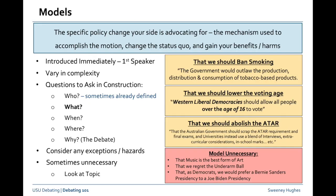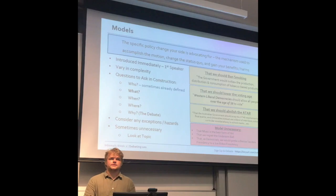Finally, a few topics where a model is quite unnecessary — these are sometimes called empirical motions. Something like 'music is the best form of art' — there's obviously no policy being changed there. Or 'we regret the underarm ball,' or 'we as Democrats would prefer a Bernie Sanders presidency to a Joe Biden presidency.' In these sorts of topics there's clearly no policy change — you're more just arguing about the state of the world.